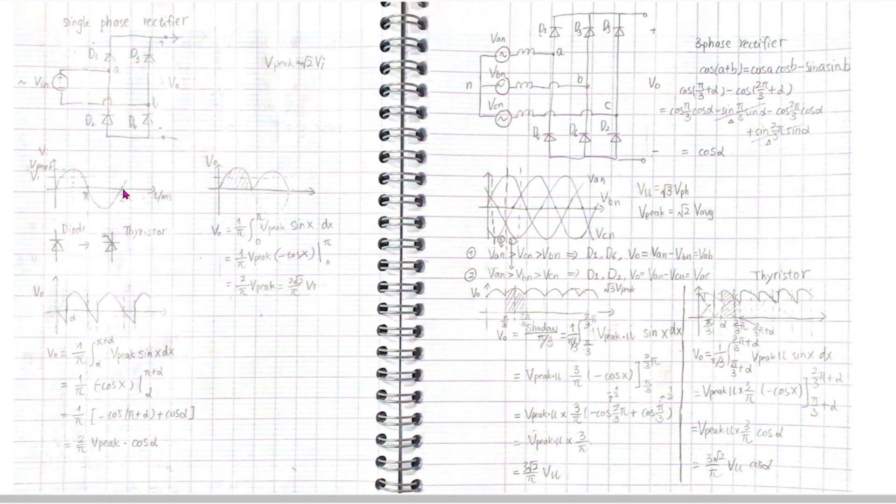The peak value of the sinusoidal wave is the square root 2 of its average voltage. We can derive the average of the output voltage. It's the shadow surface over the half-circle time pi. The integral of the sine wave is the minus cos difference at the point zero and pi. We get the average VO equals 2 over pi V peak.